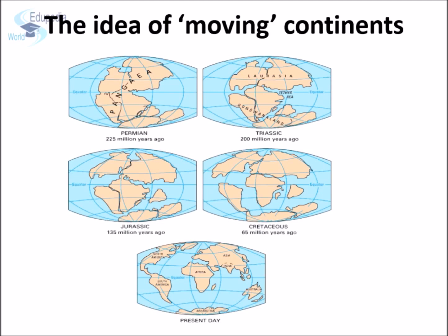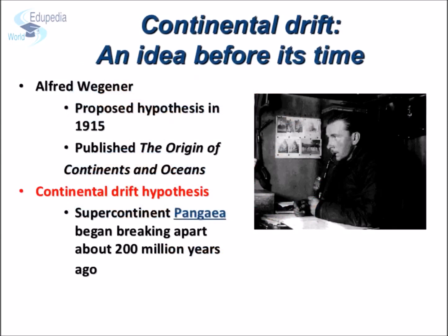The idea of moving continents proposed by Alfred Wegener faced strong opposition from people — it was very difficult for people to believe such an idea. However, Alfred Wegener was very confident about his theory. According to him, around 200 million years ago this supercontinent started breaking apart, and in the last 200 million years the continents have taken their present shape. You can understand how this happened by looking at the diagrams. Alfred Wegener proposed his hypothesis in 1915 and published a book called The Origin of Continents and Oceans, in which he mentioned that Pangaea began breaking apart about 200 million years ago.